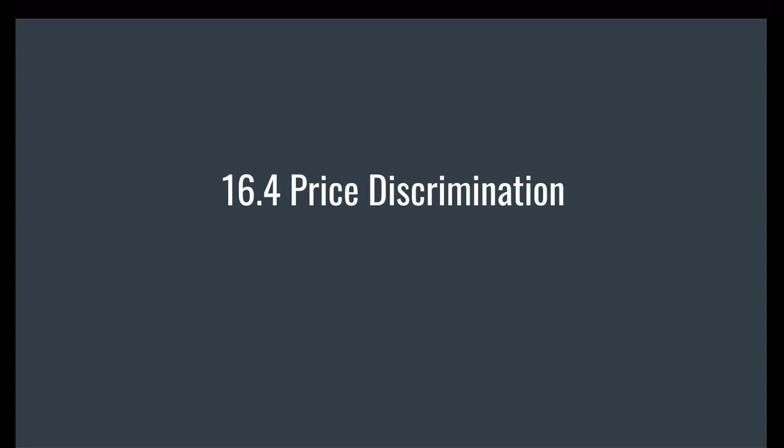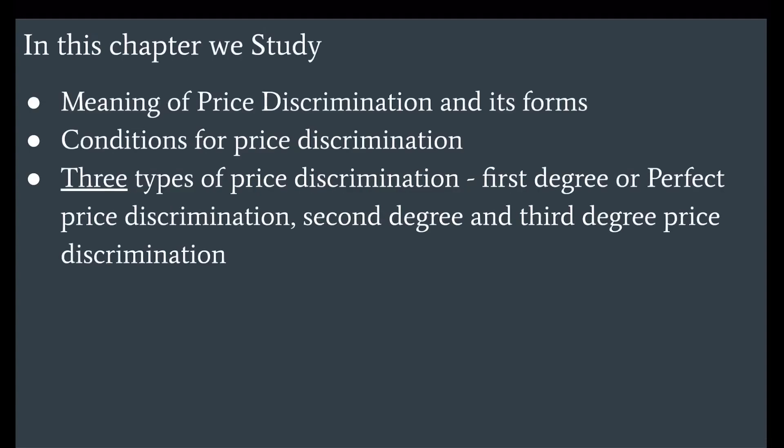16.4 Price Discrimination. In this chapter we study the meaning of price discrimination and its forms, conditions for price discrimination, and three types of price discrimination: first degree or perfect price discrimination, second degree, and third degree price discrimination.